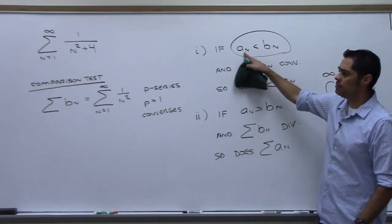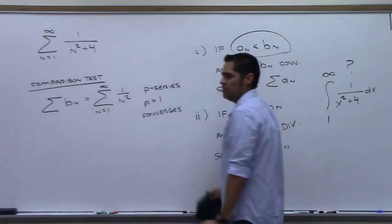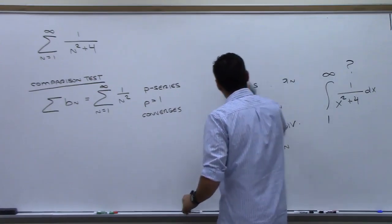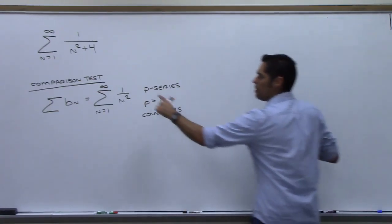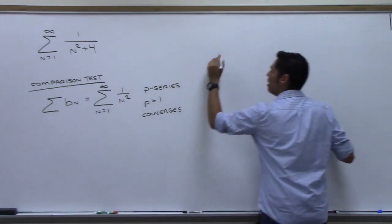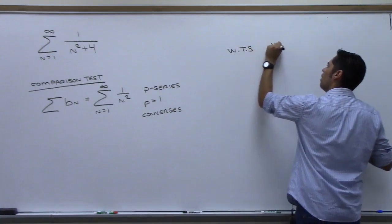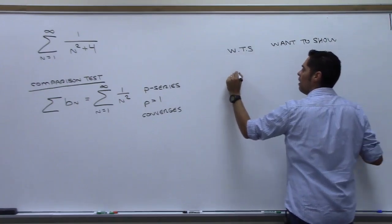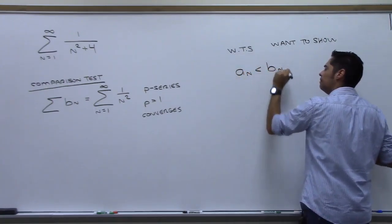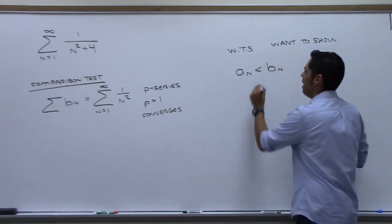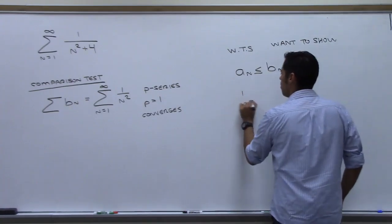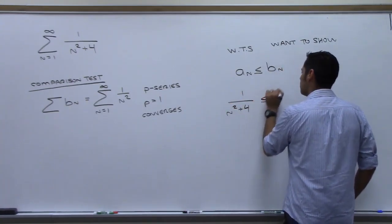Do you know what a_sub_n is? Do you know what b_sub_n is? I'm going to do a comparison test. Here's my comparison series. I want to show that a_sub_n is less than or equal to b_sub_n. So: 1 over (n² + 4) must be less than or equal to 1 over n².